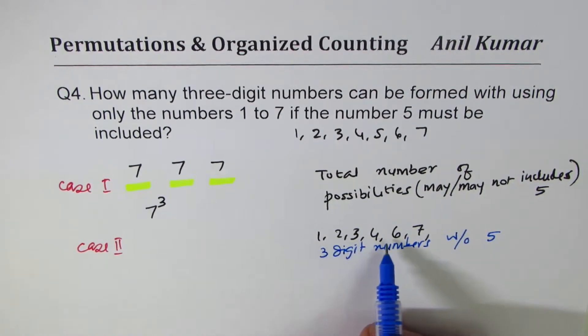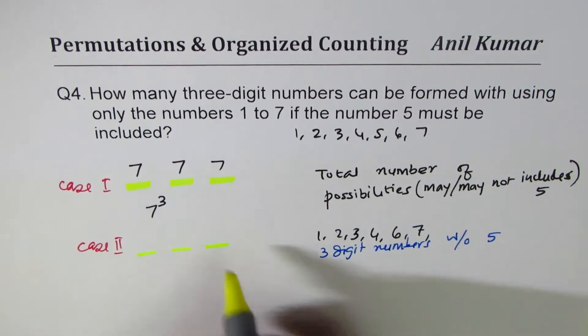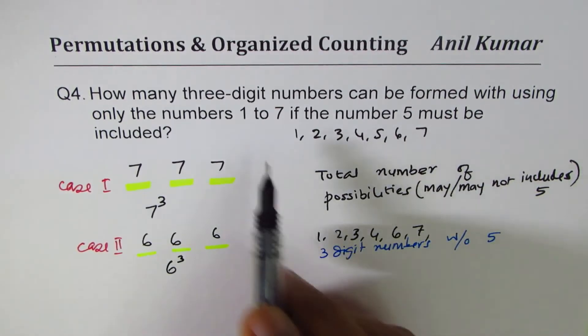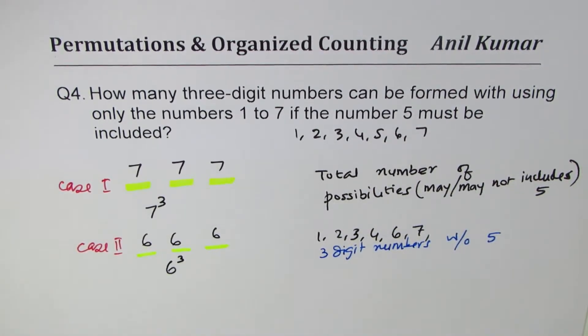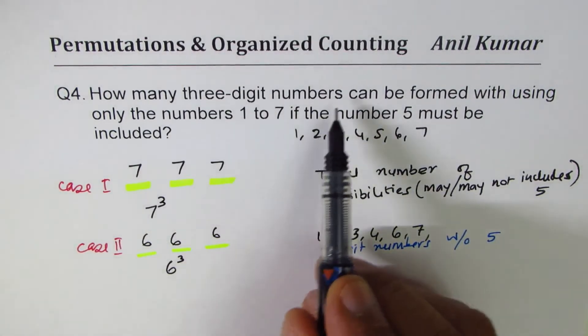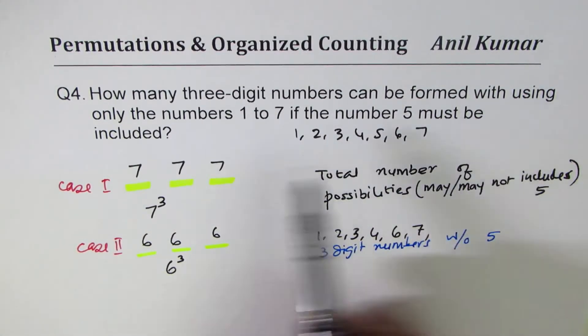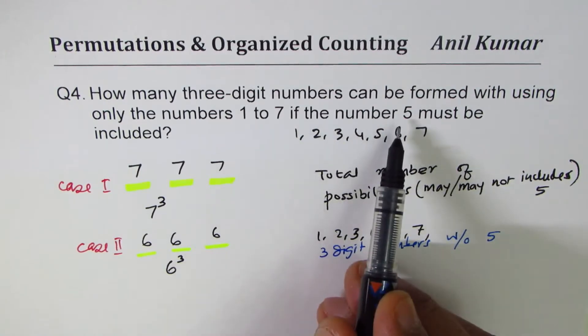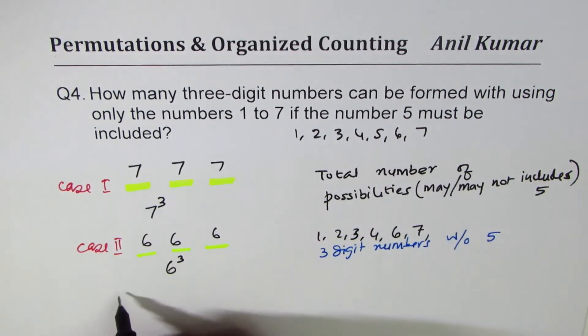Numbers 1, 2, 3, 4 excluding 5, 6, 7. These are six, so we get 6 × 6 × 6, that is 6³. Now I think it's easier to answer the question. How many three-digit numbers can be formed using only these numbers if number 5 must be included? So 5 must be included.